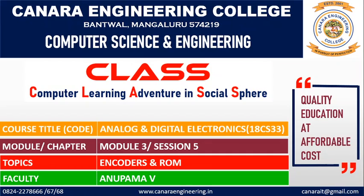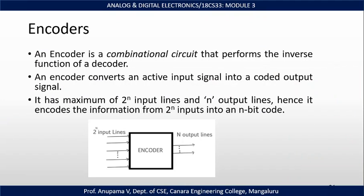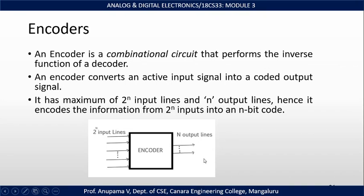Welcome to this video lecture on analog and digital electronics. In this session, I will discuss the concept of encoder and ROM. An encoder is a device or process that converts data from one format to another. It is a combinational circuit that performs the inverse function of a decoder. An encoder converts an active input signal into a coded output signal. The block diagram shows a 2^N-to-N encoder with 2^N input lines and N output lines, encoding information from 2^N inputs into an N-bit code.